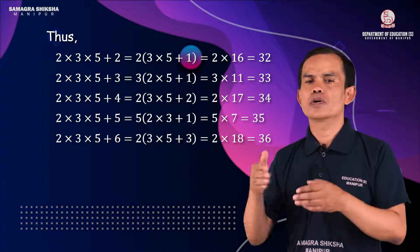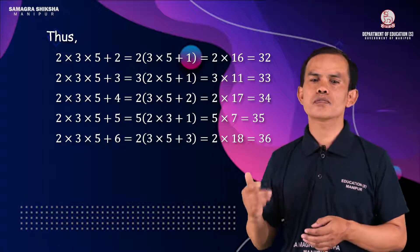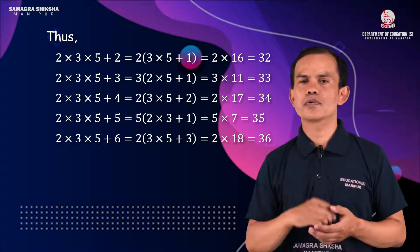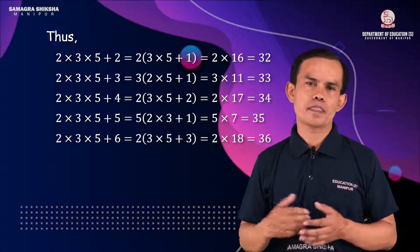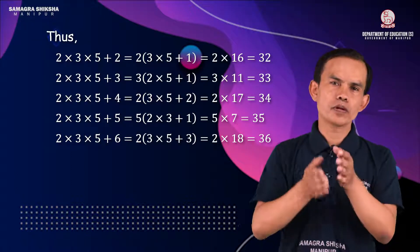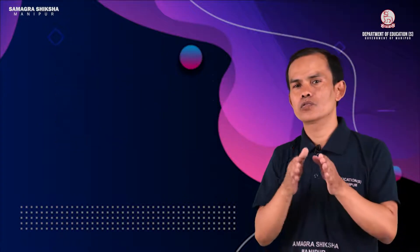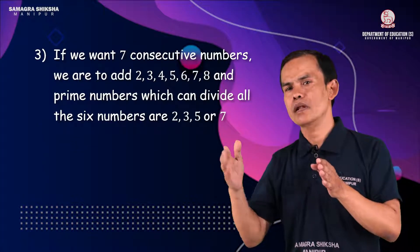For example, the five consecutive composite numbers 32, 33, 34, 35, 36. Reading them: 32 is divisible by 2, 33 by 3, 34 by 2, 35 by 5, 36 by 2. These are five consecutive composite numbers.